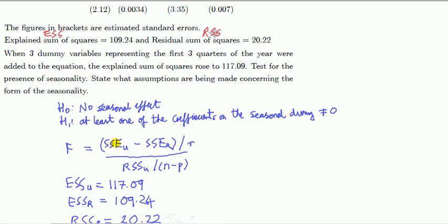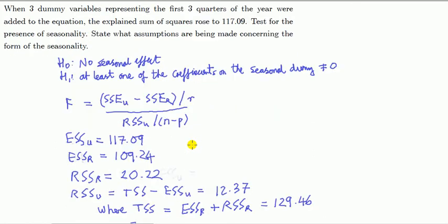For notation, I want this to say ESS because I've used ESS here. So ESS subscript U stands for the explained sum of squares in the unrestricted model. ESS subscript R is for explained sum of squares in the restricted model, divided by R, where R is the number of parameter restrictions.